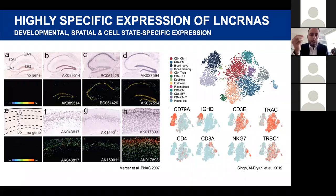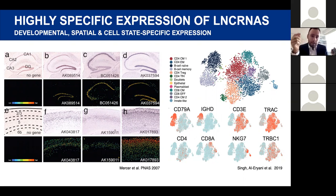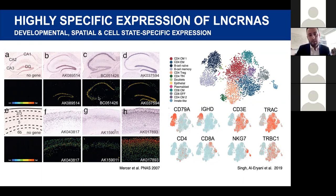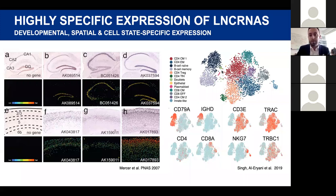Some of these less abundant transcripts aren't spuriously produced — some are very highly expressed, but in a very small number of cells. You can see in fluorescence images of mouse brains that some non-coding RNAs are super highly expressed but in very concise cellular populations. If you were to sequence a brain sample, you'd put the cells in a blender and get very few of those non-coding RNAs because they're dissipated throughout the rest of the sample. Single-cell sequencing technologies have recently allowed us to zoom into individual cellular populations.